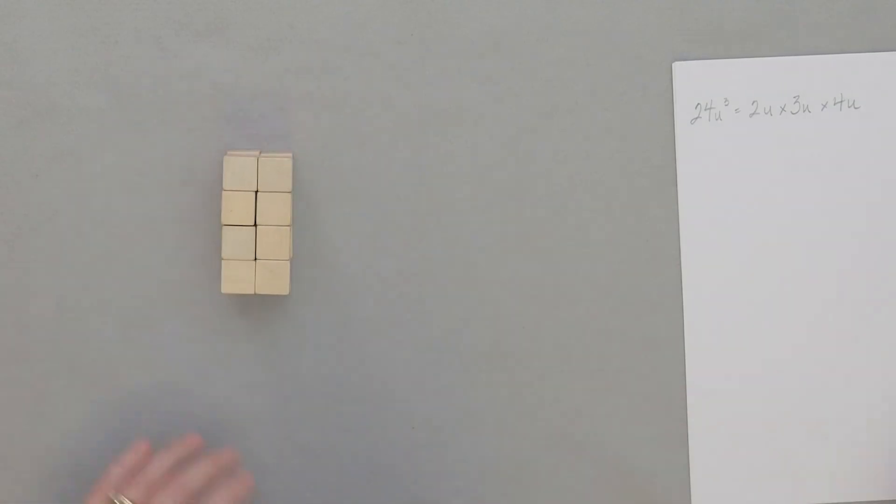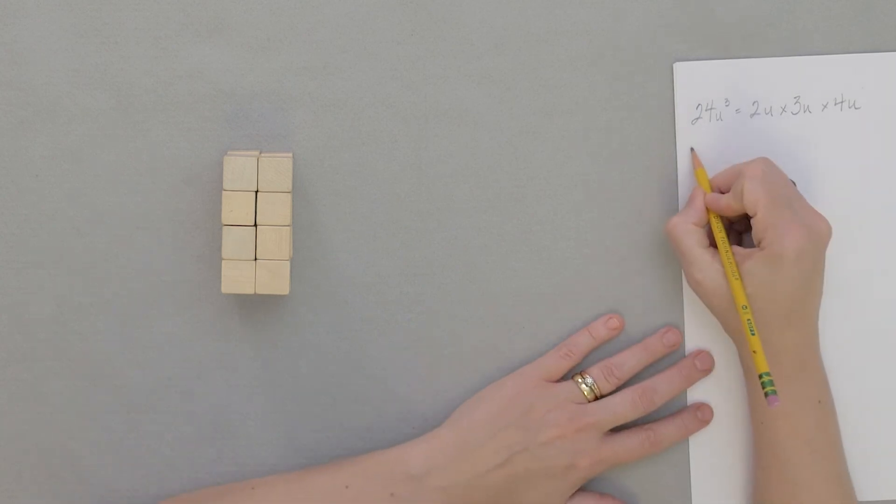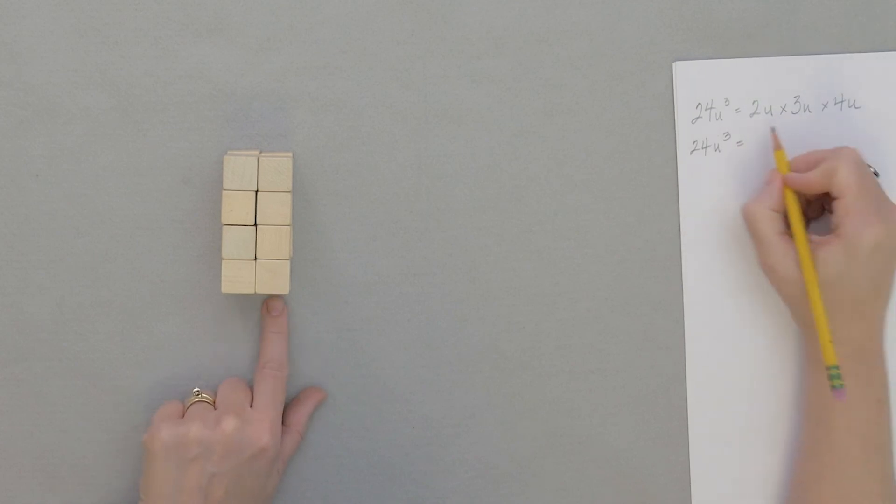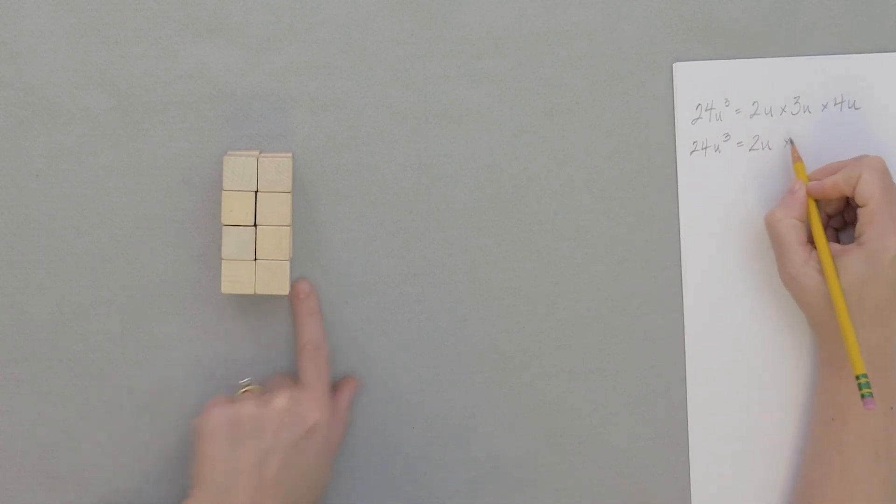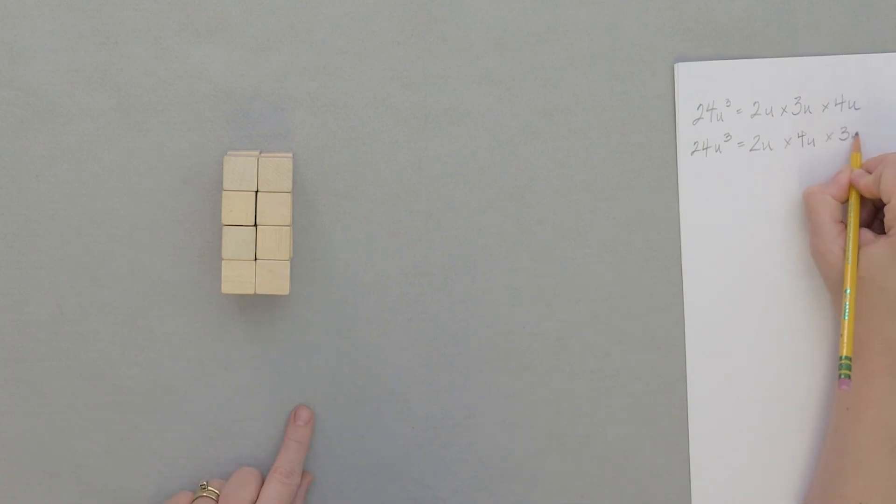Oh yeah, this one's a little different, isn't it? 24 units equals... I've got the 2 units times the, times 4 units, and then we went up 3 units.